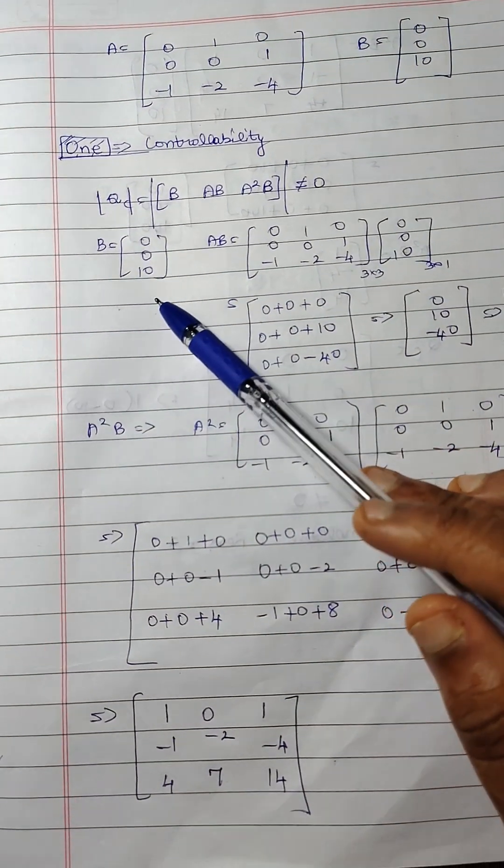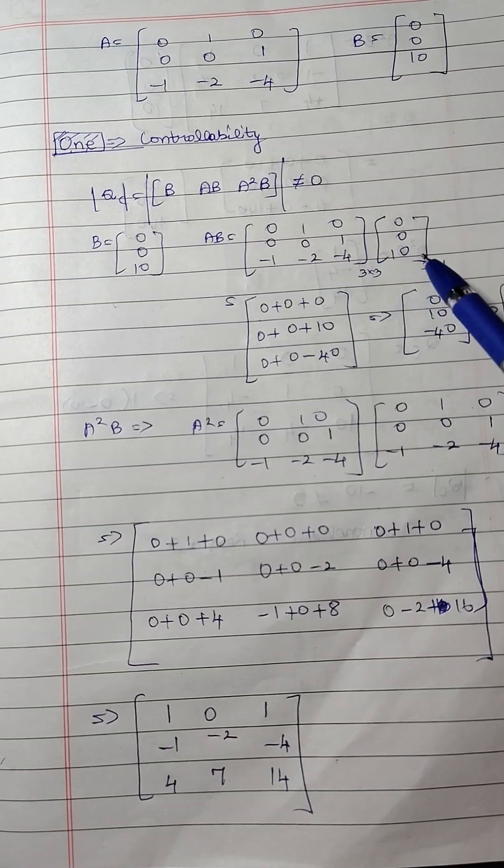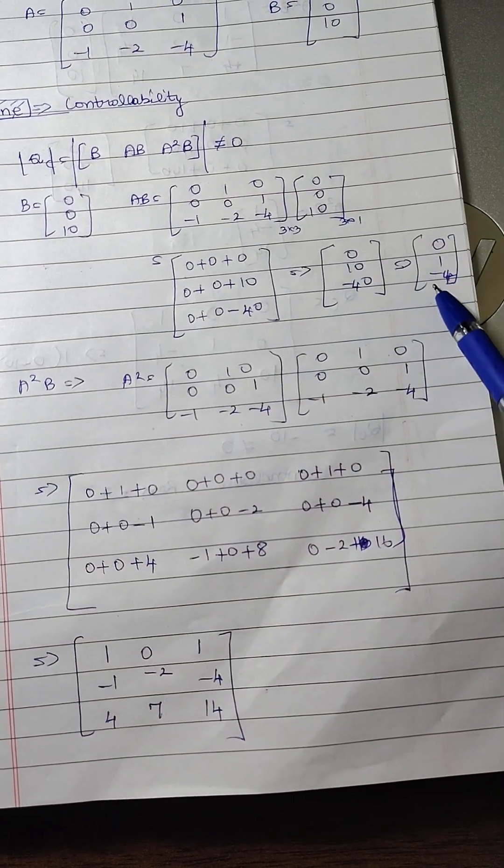B is equal to 0, 0 and 10. A B is 0, 1, 0, 0, 1, minus 1, minus 2, minus 4 and 0, 0, 10. When multiplying this we get the value as 0, 1 and minus 4.